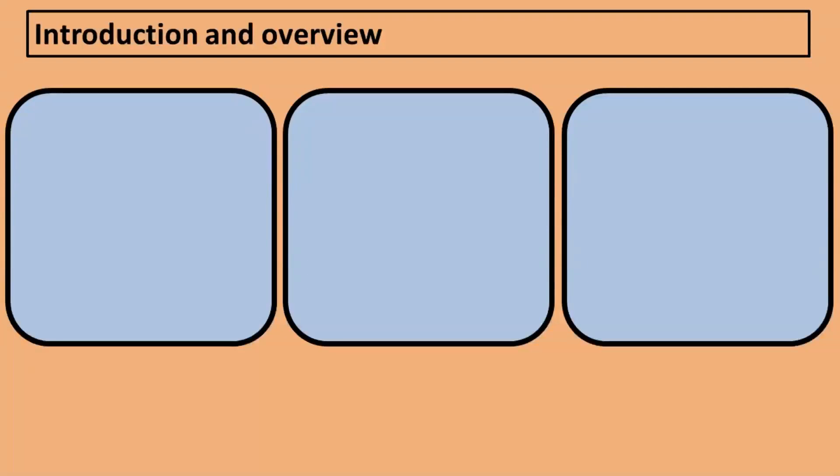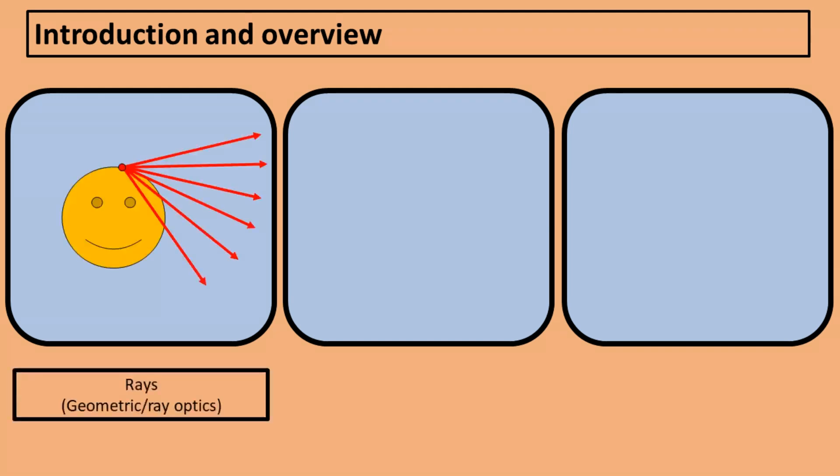In classical optics, there are three common ways to model light. The simplest model of light is the ray model, which states that each object point scatters rays of light in all directions, and these rays travel in straight lines.